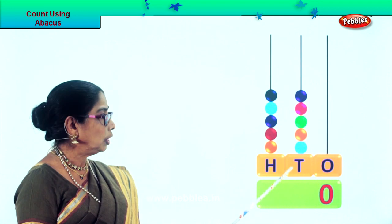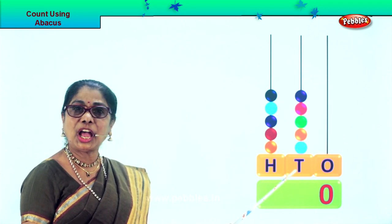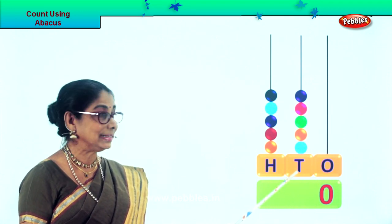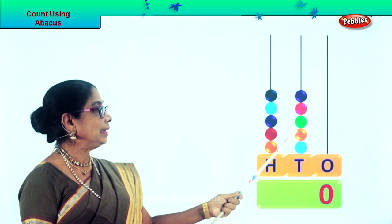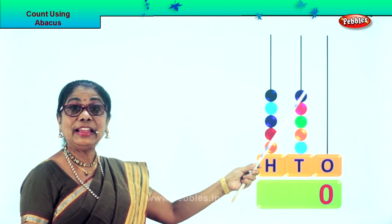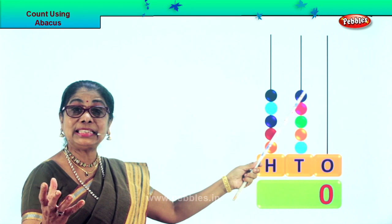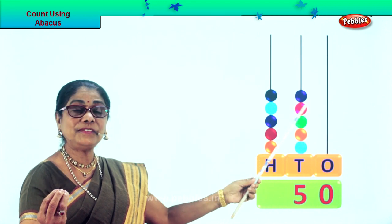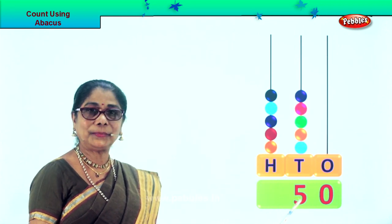Now we get on to the 10s — we count in 10s: 10, 20, 30, 40, 50. There are 5 beats, so we put down number 5.